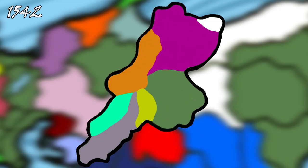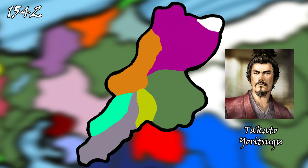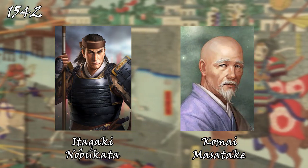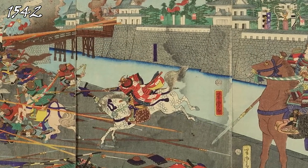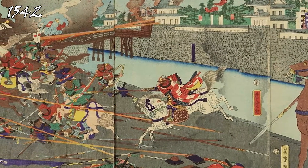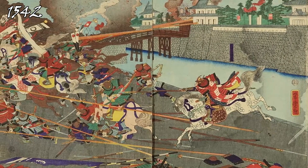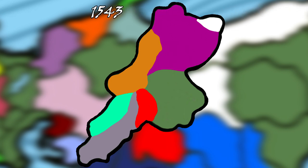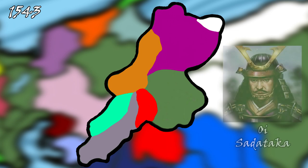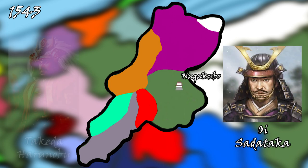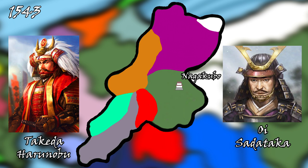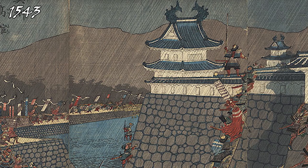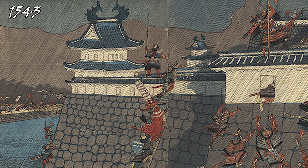The Takeda would then clash with Takato Yoritsugu, another lord in the Suwa Valley who had previously sided with the Takeda against the Suwa clan. Yet Takeda forces led by Itagaki Nobukata and Koumai Masatake would crush Yoritsugu and allow the Takeda clan to establish full control over the Suwa Valley. Yoritsugu would unfortunately escape, although the Takeda had now gained a solid foothold in Shinano and a proper staging point for future invasions. In 1543, Oi Sadataka, a Takeda ally in Shinano, deserted Haranobu, giving him a reason to invade the Saku area, where he quickly defeated Sadataka and seized his castle of Nagakubo, allowing for further expansion northward.